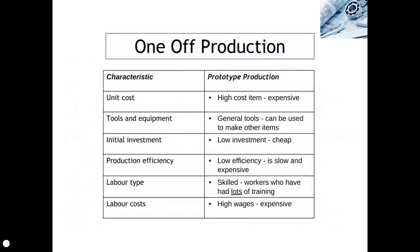So there are four scales of production: one-off production, unique production, batch production, mass production, and continuous production.